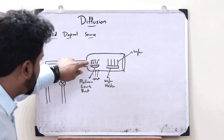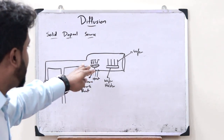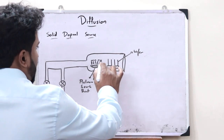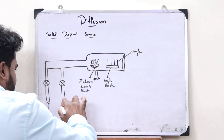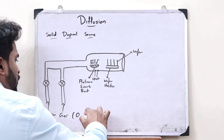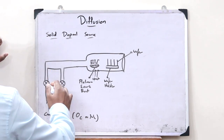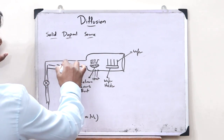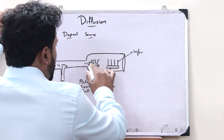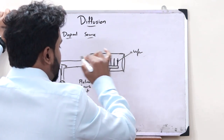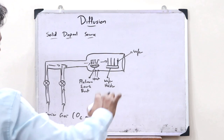Now, since this solid dopant source is converted into vapor form, it won't directly go and diffuse onto the particular wafer — we just have it in the vaporized form. So, for us to diffuse this particular vapor onto these wafers, what we do is we now give certain carrier gases. These carrier gases may be O2 or N2. This carrier gas will now take these vaporized dopant sources and would diffuse it onto each of these wafers. This is simply how you can achieve diffusion from a solid dopant source.